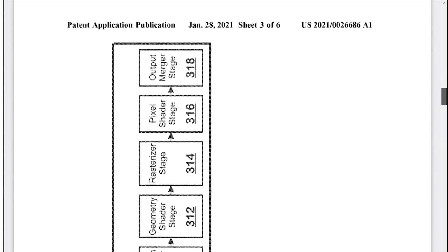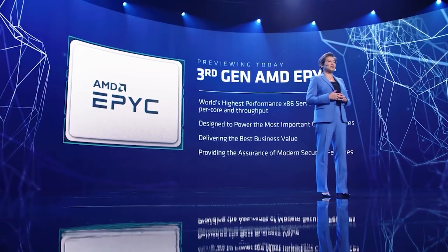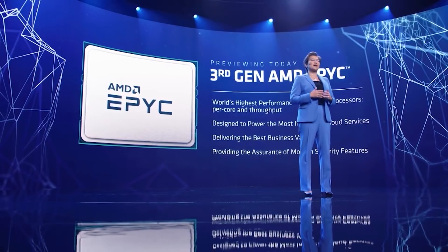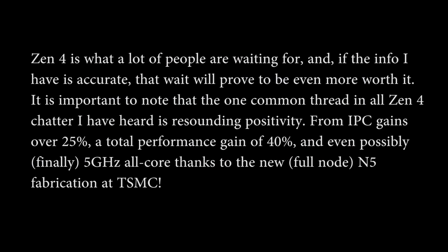Switching from AMD's GPUs to their CPUs — there's actually a rumor from the website Chips and Cheese, I'll link to their website in the description. According to their sources, Genoa — AMD's next generation server processors — are going to be pretty darn speedy, considerably faster than what we have with Zen 3. Zen 4 is what a lot of people are waiting for, and if the info is accurate, the wait will prove to be even more worth it. There are IPC gains over 25%, total performance gains over 40%, and even possibly finally 5 GHz all-core, thanks to the new full node N5 fabrication at TSMC.